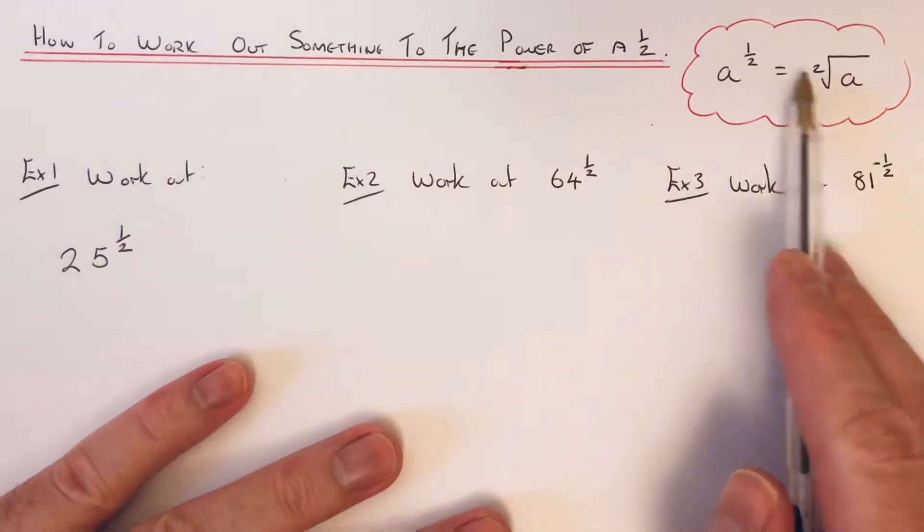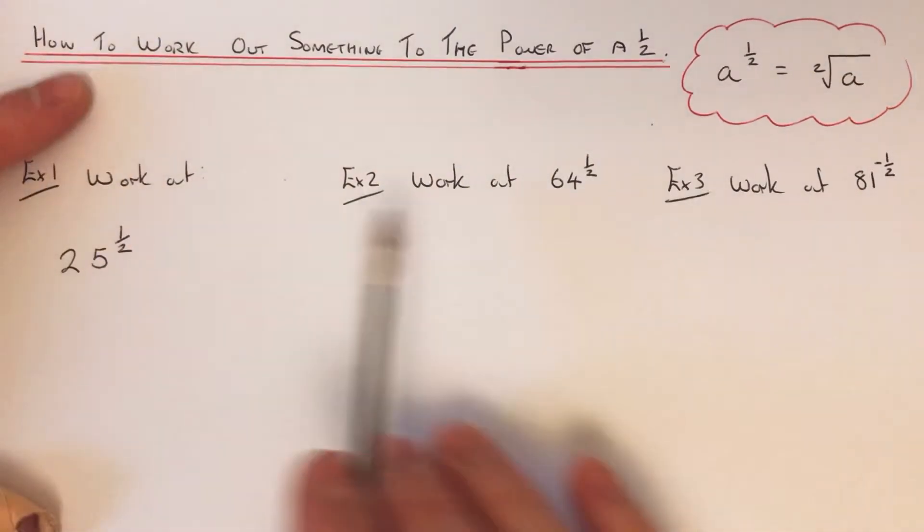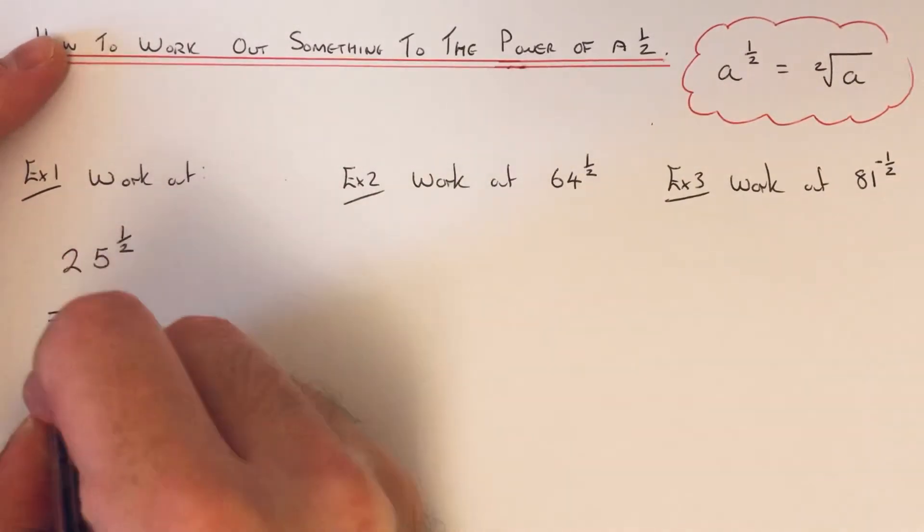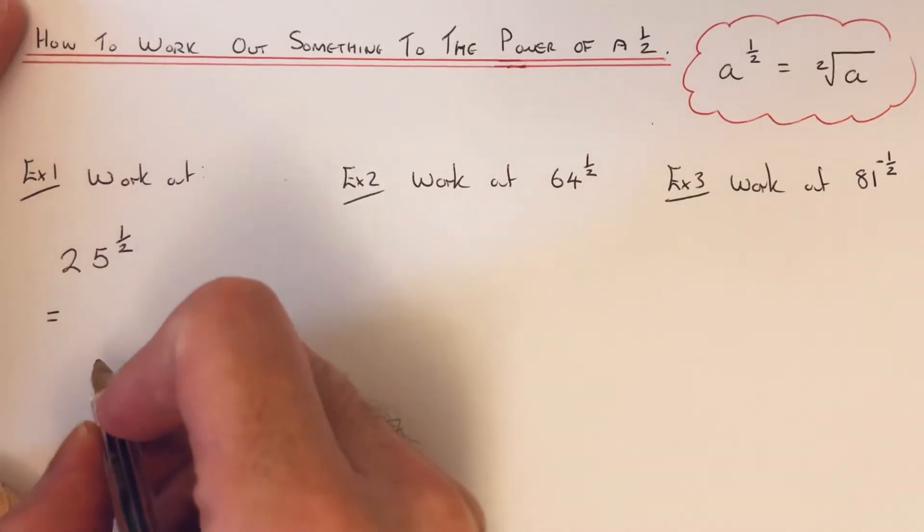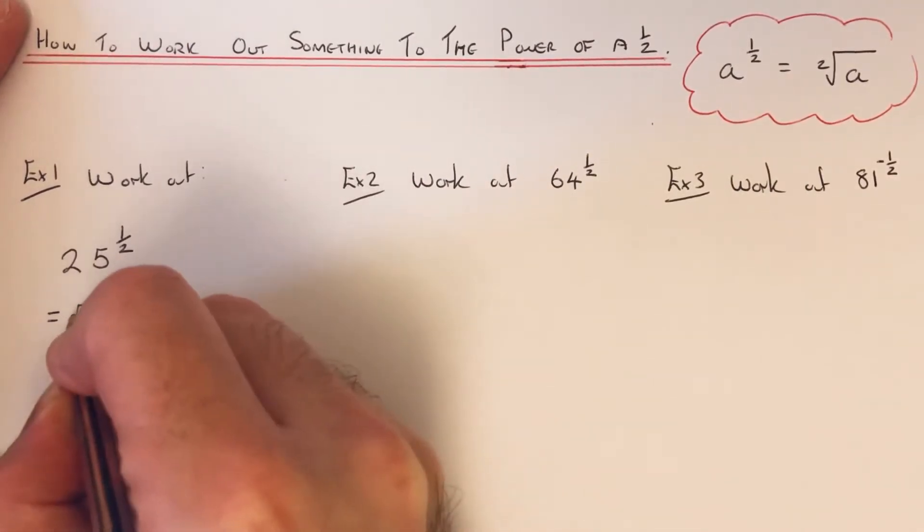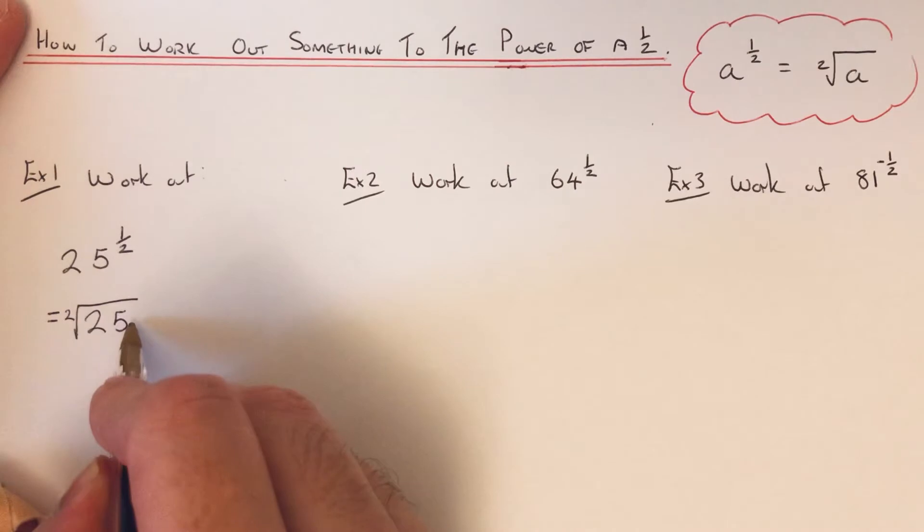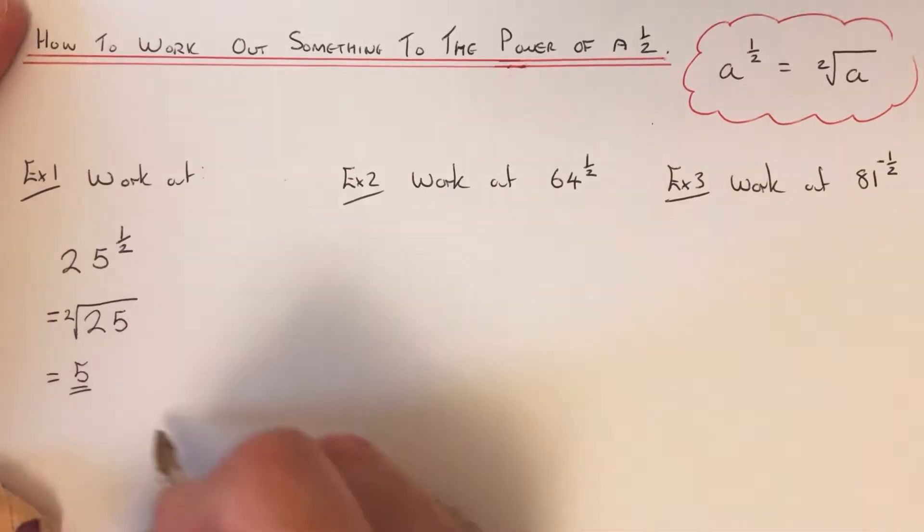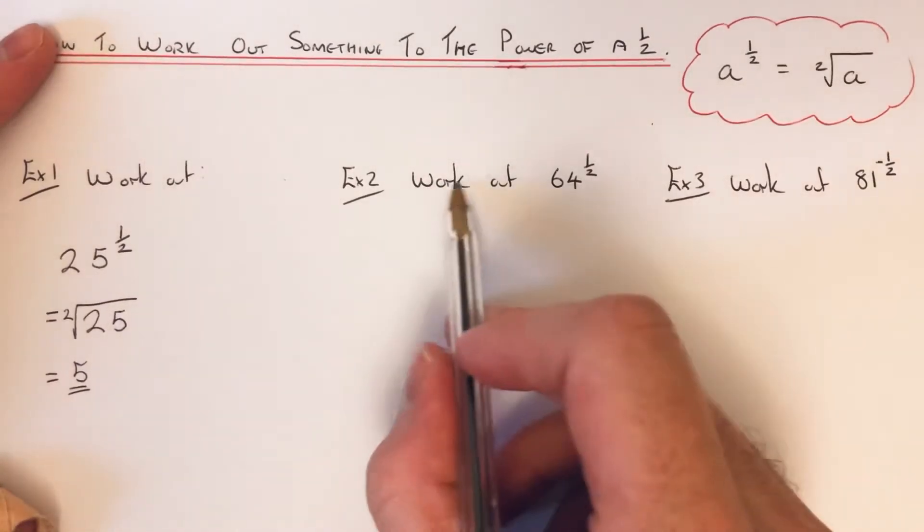Power of a half means square root. So let's have a look at example one. We've got to work out 25 to the power of a half, so all this means is we just need to do the square root of 25.